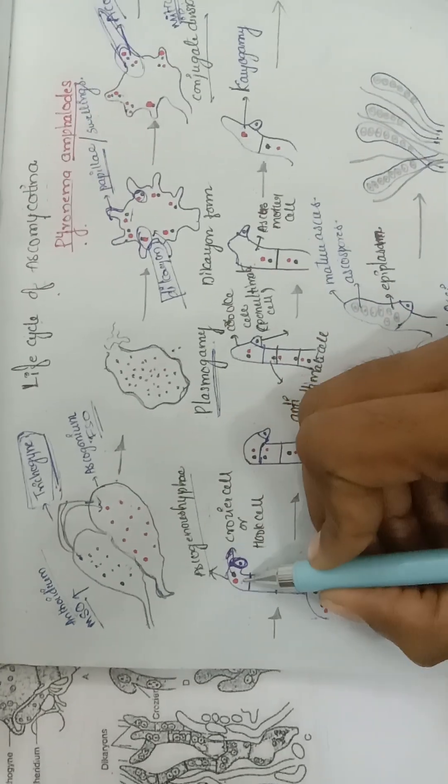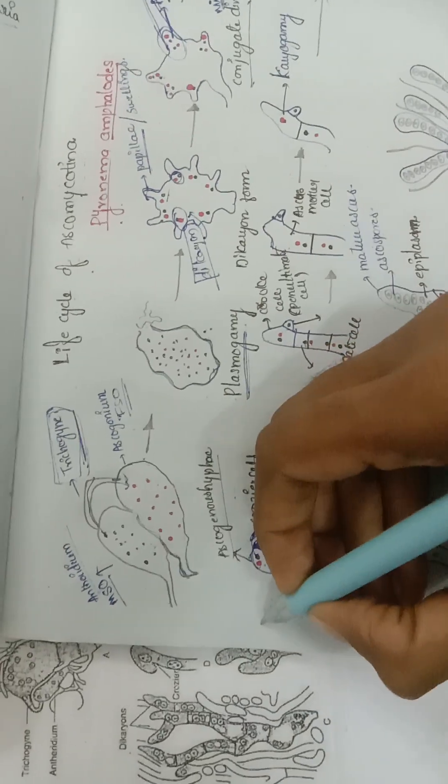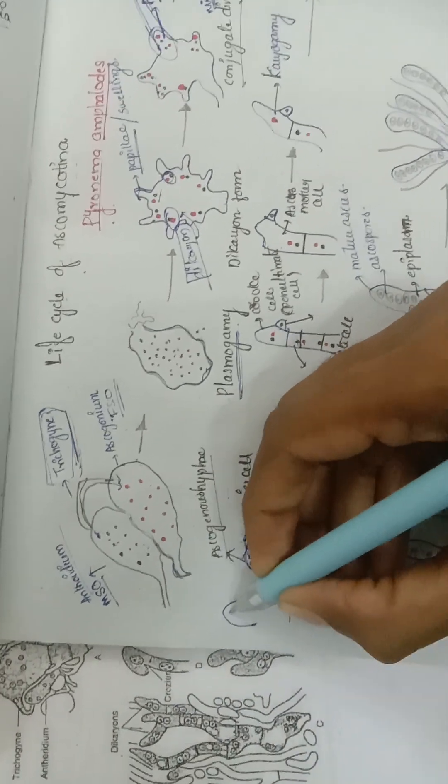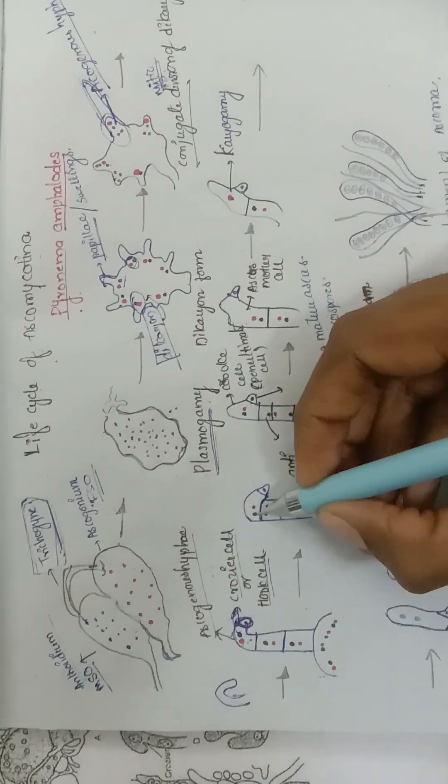The penultimate cell is called the crozier cell or hook cell, which looks like a hook. It is called a hook cell or crozier cell, and then this crozier cell undergoes...